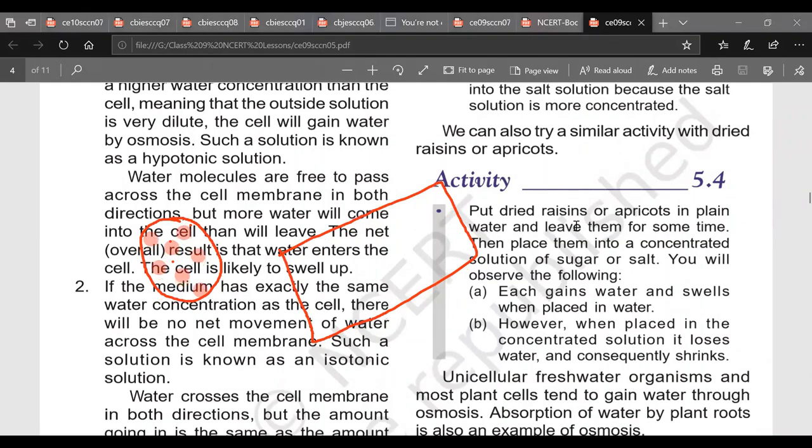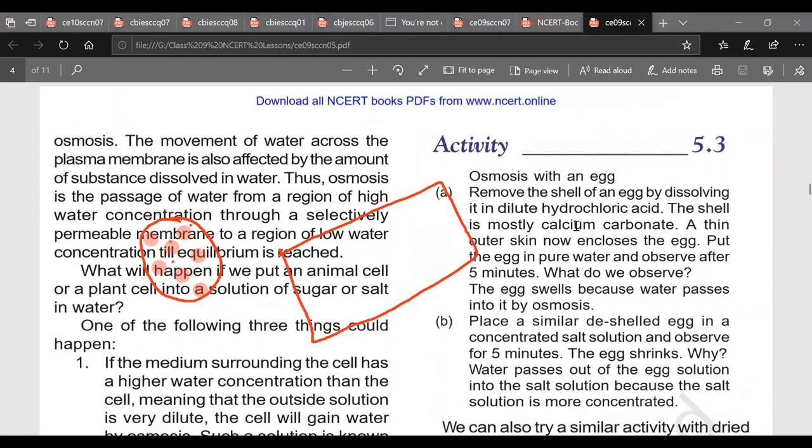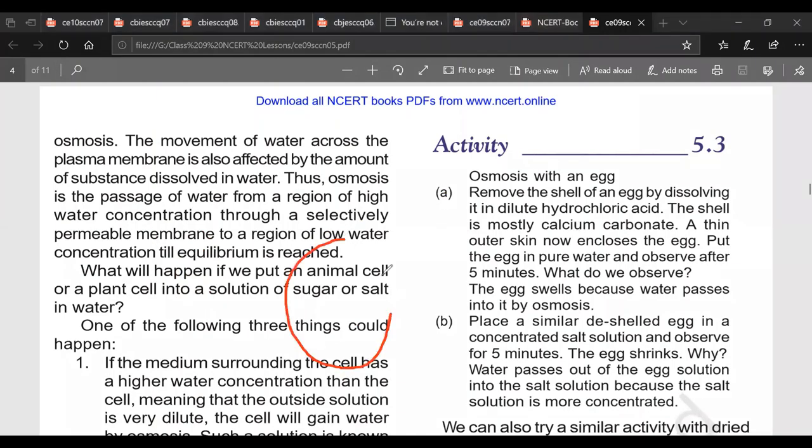Now here is the activity: osmosis with an egg. In this case what we have to take is, we will be taking one egg and we put it in a beaker containing dilute hydrochloric acid or any other acid. Normally we take acetic acid only. Now the shell of the egg is made up of calcium carbonate. It will dissolve with acid to form calcium chloride and carbon dioxide and water. This carbon dioxide will ooze out.